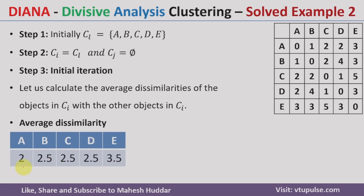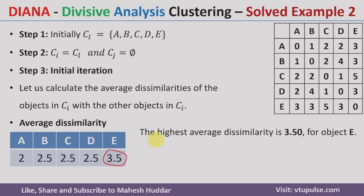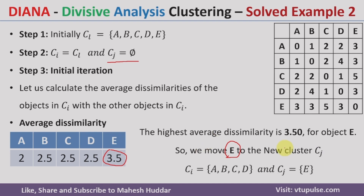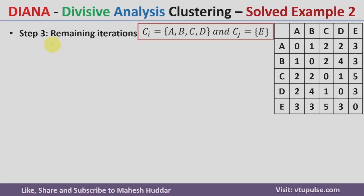Comparing the average dissimilarity of all 5 data points, the average dissimilarity of E is the highest. This means we will move E to cluster CJ. Previously CJ contained no data points. Once we move E to CJ, we get 2 clusters: one cluster containing data points A, B, C, D, and another cluster containing E. Now we need to check whether there is any possibility to move any of the remaining data points A, B, C, D to CJ, which can be done in the remaining iterations.